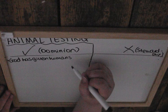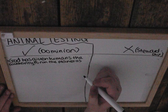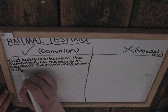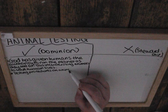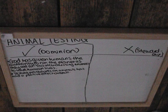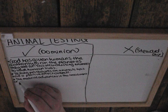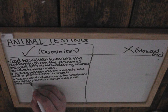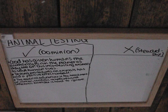For animal testing — the dominion view — God has given humans the authority to run the planet as they see fit, which includes using animals to save human lives. Testing procedures and products on animals has had a positive effect overall, including medical advances in the treatment of cancer, cardiac complaints, infectious diseases, and many other conditions. It's hard to ignore these benefits.